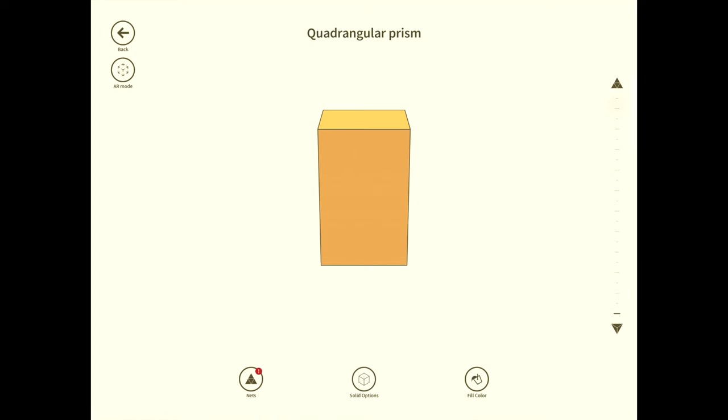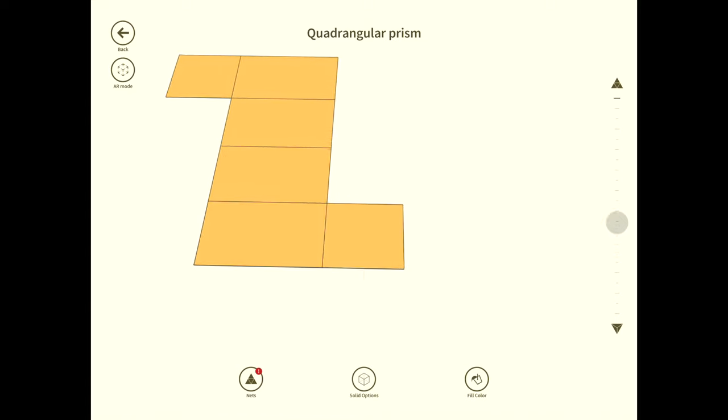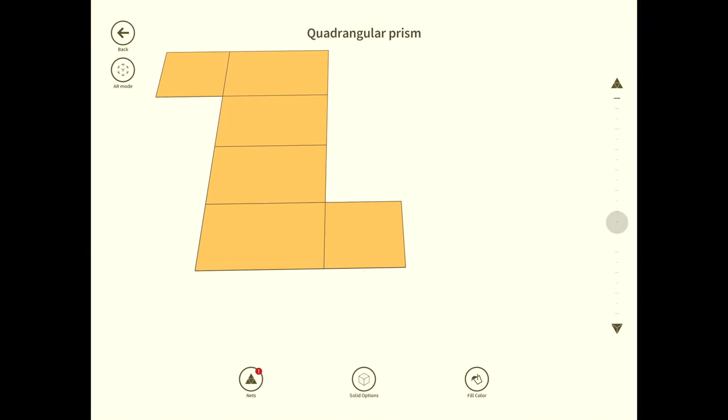So the net is basically, what if, imagine this was a box from Amazon and you took it apart completely, but there was no overlapping. Let's look at what would happen here. Okay, so this is one way the net could look. I tend to normally draw the sides on the same line, but this is basically what a net would look like here for this.